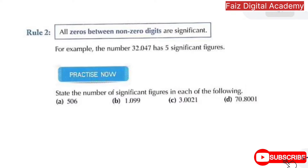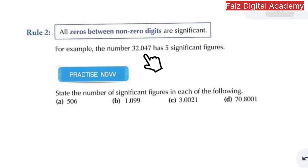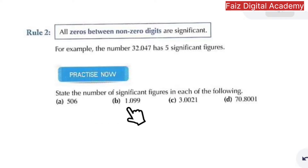For example, the number 32.047 contains five digits: 1, 2, 3, 4, and 5, and all of these digits are significant — whether it is zero or non-zero — because the zero is in between the other significant digits. Therefore, in the following parts, 506 has three significant figures, and 1.099 has four significant figures.